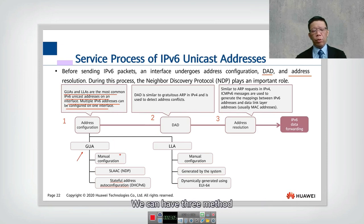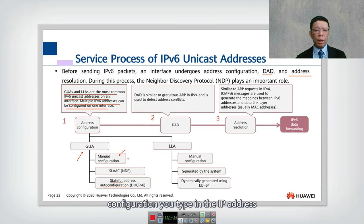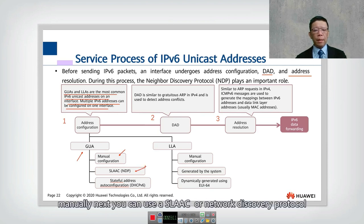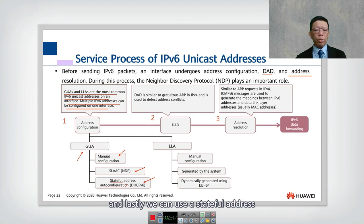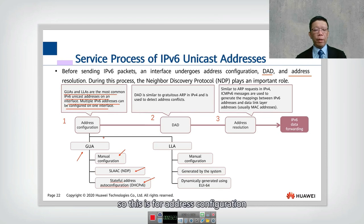For address configuration, there are three methods to assign a global unique address. The first method is manual configuration where you type the IP address manually. Second, you can use SLAAC (Stateless Address Auto-Configuration) which uses the network discovery protocol. Lastly, you can use stateful address auto-configuration which uses DHCPv6.